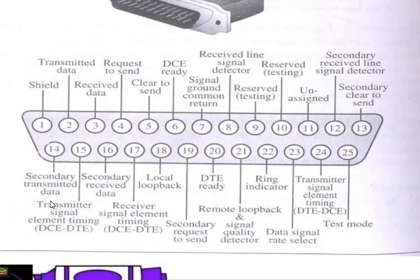Pin number 11 is unassigned. Pin number 12 is secondary received line signal detector. Pin number 13 is secondary clear to send. Pin number 14 is secondary transmitter data. Pin number 15 is transmitter signal element timing DCE to DTE. Pin number 16 is secondary receive data. Pin number 17 is received signal element timing DCE to DTE. Pin number 18 is local loopback. Pin number 19 is secondary request to send. Pin number 20 is DTE ready. Pin number 21 is remote loopback and secondary quality detector. Pin number 22 is ring indicator. Pin number 23 is data signal rate select. Pin number 24 is transmitter signal element timing DTE to DCE. Pin number 25 is test mode.